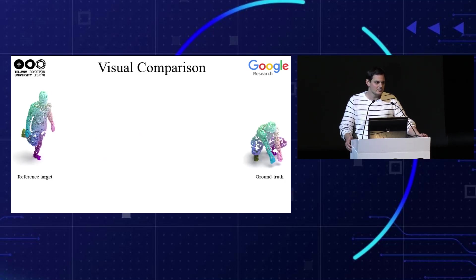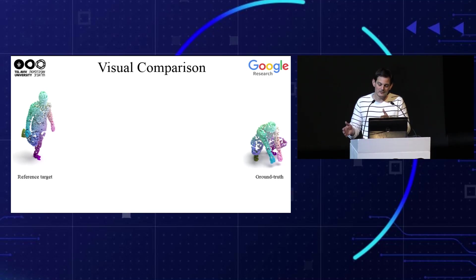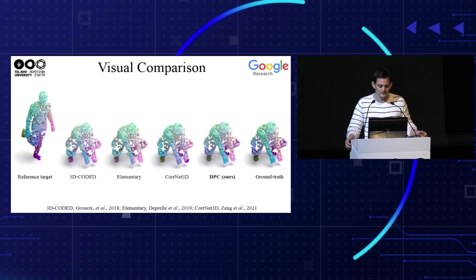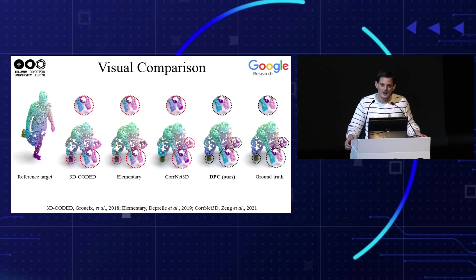Let's see a visual example of the correspondence for the SHREC19 dataset, where the target point cloud is on the left and the ground truth source mapping is on the right. Note that this is a very challenging pose — a non-standard pose of a crouching person. Previous methods suffer from severe correspondence errors, for example at the legs and the hands. In contrast, our method produces a much more accurate result which resembles the ground truth mapping from the source to the target.